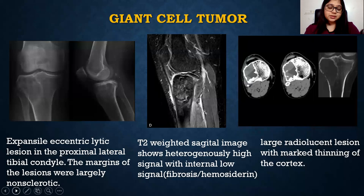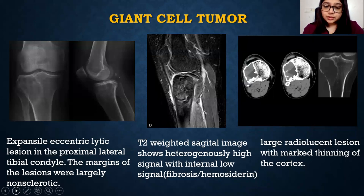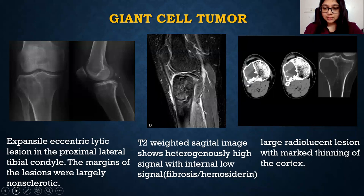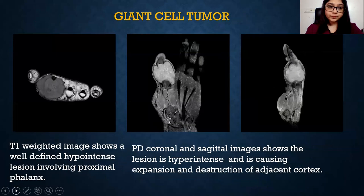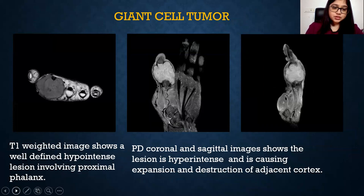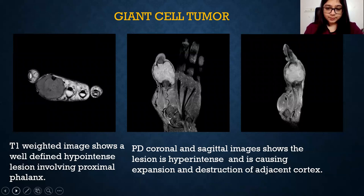Giant cell tumor: X-ray showed an expansile eccentric lytic lesion in the proximal lateral tibial condyles, with largely non-sclerotic margins. T2-weighted image showed heterogeneously high signal with internal low signal, representing fibrosis or hemosiderin deposition. CT was also performed and showed a large radiolucent region with thinning of the cortex. The patient presented with localized swelling and pain. PD-weighted coronal and sagittal images showed a well-defined hypointense lesion on T1 that was hyperintense and causing expansion and destruction of the edges and cortex. Histopathology confirmed it to be a giant cell tumor.